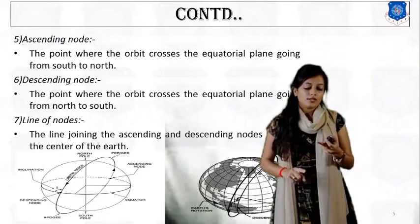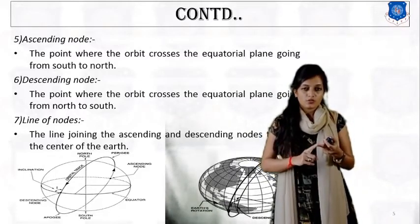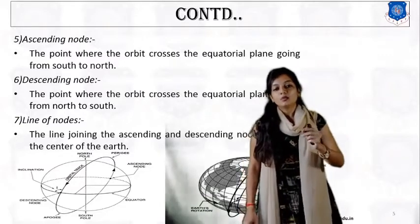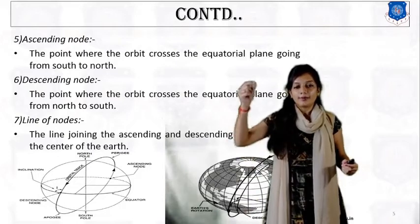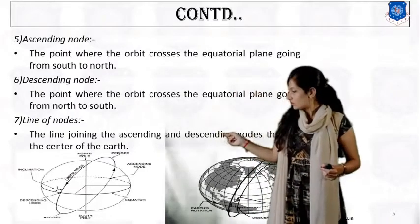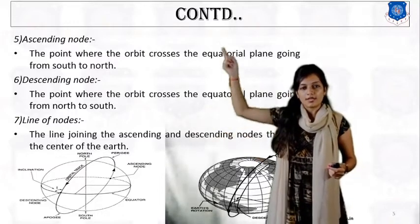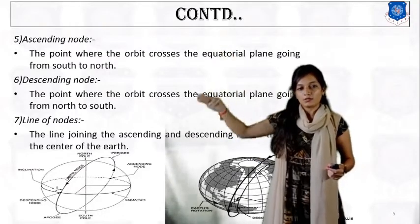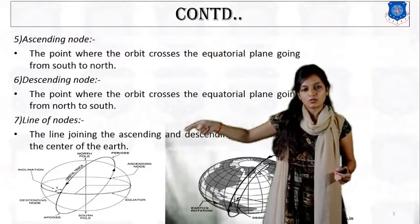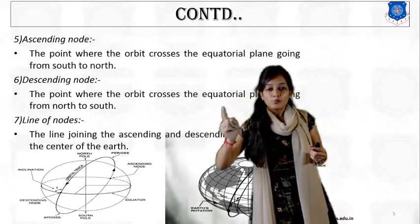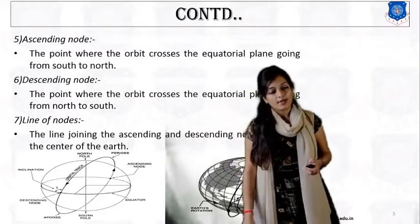What is the line of nodes? The line of nodes is the line joining the ascending node and the descending node through the center of the earth. The difference between line of nodes and line of apsides is: line of apsides includes the apogee and perigee points, while line of nodes includes the ascending and descending nodes.